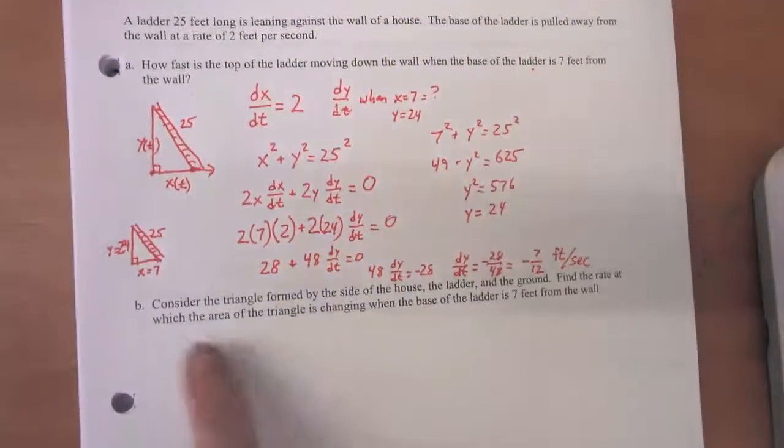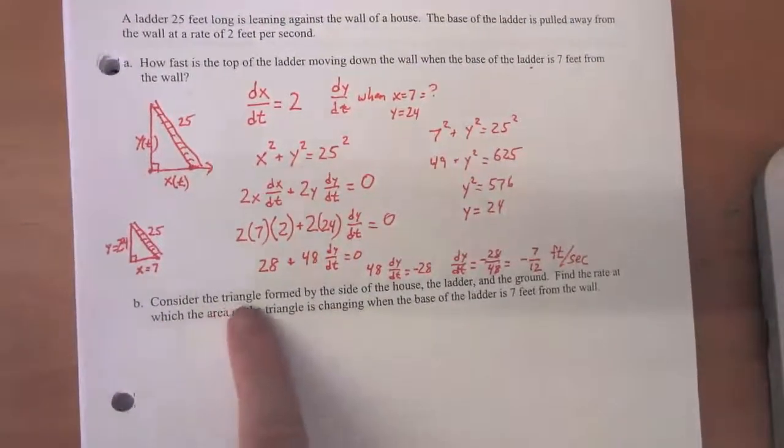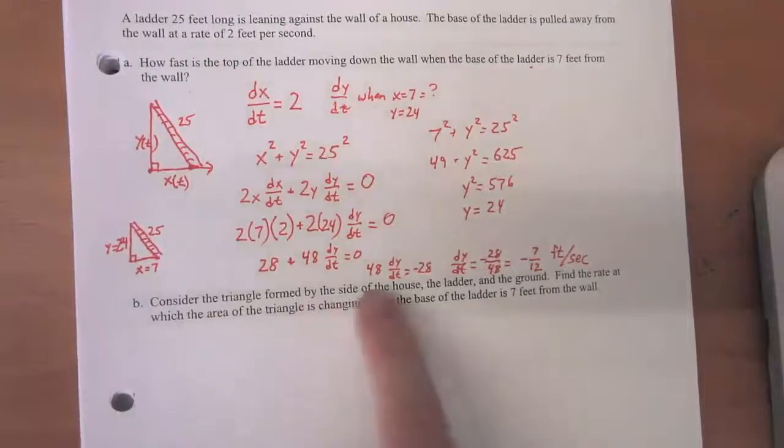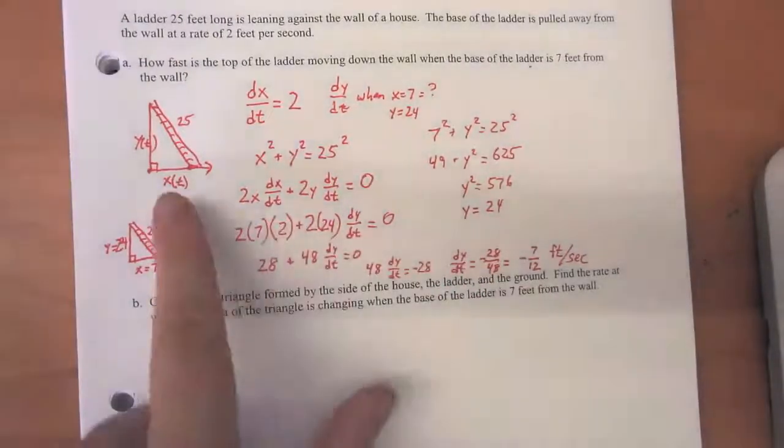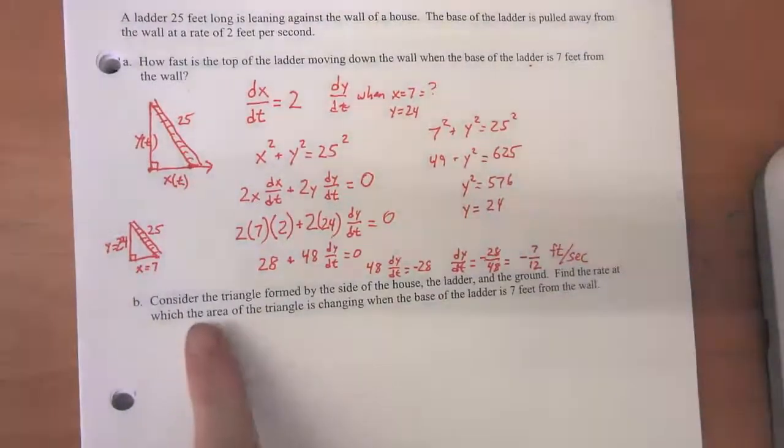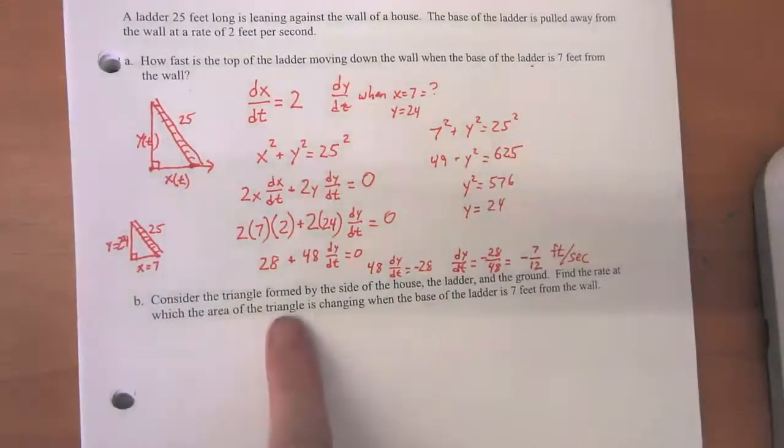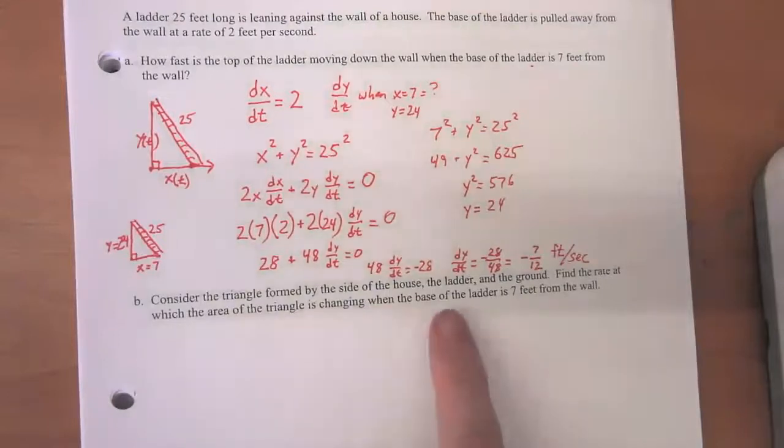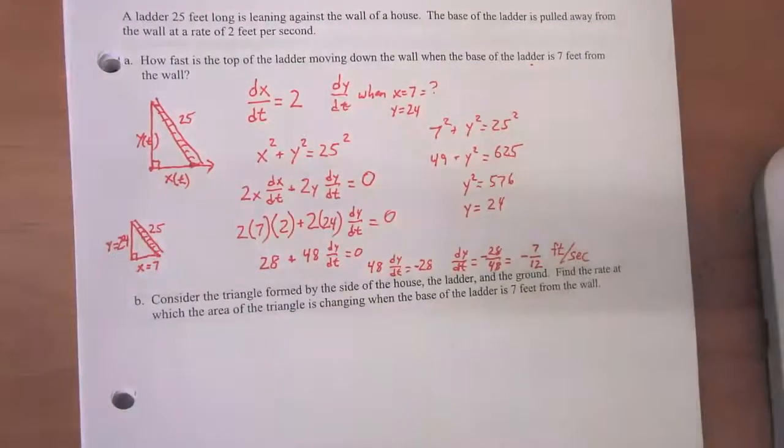And for part B, they're saying consider the triangle formed by the side of the house, the ladder, and the ground. So it's this triangle right there. Find the rate at which the area of the triangle is changing when the base of the ladder is seven feet from the wall.